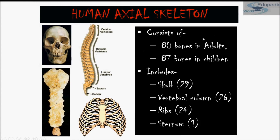The human axial skeleton consists of skull, ribs, sternum, and vertebral column. The skull includes 29 bones, the vertebral column includes 26 bones, ribs are 24 in number, and sternum is 1 in number.